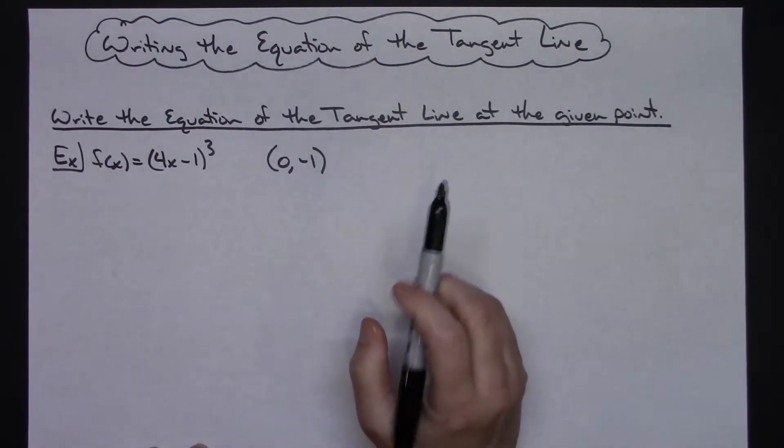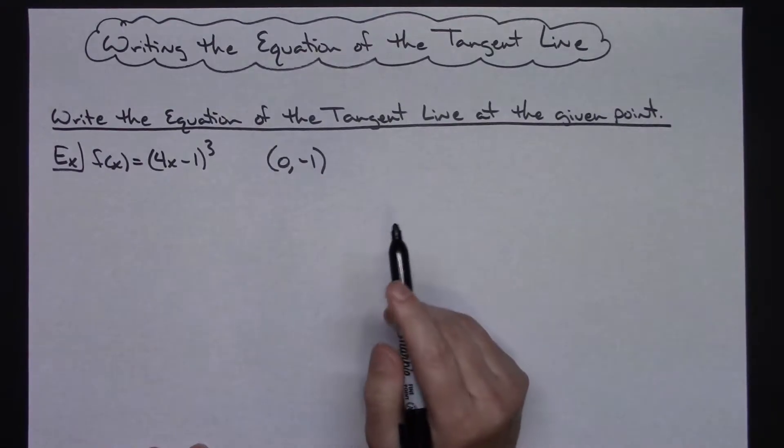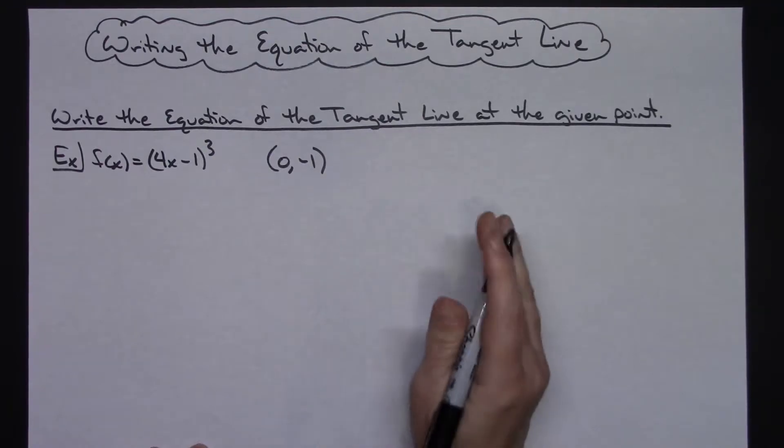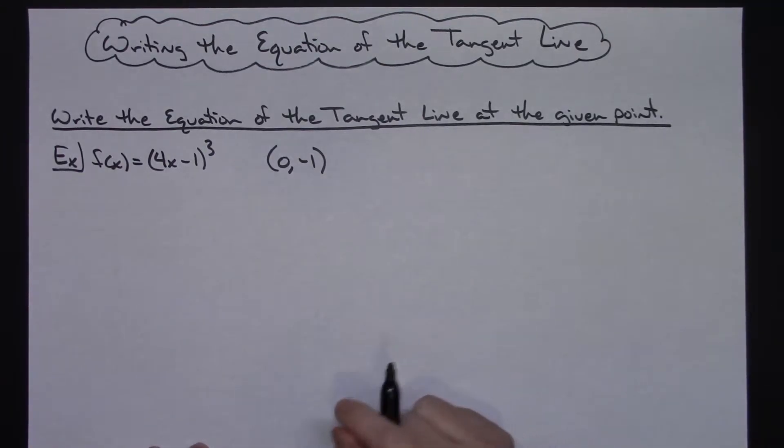I am assuming that you have been working with derivatives long enough to have been introduced to the chain rule, because this particular function that I'm going to work this example out with deals with the chain rule when I take the derivative.